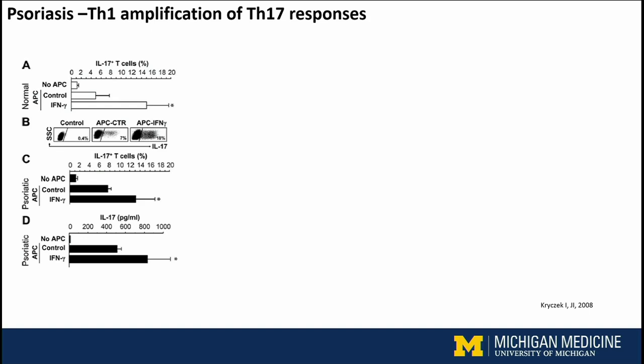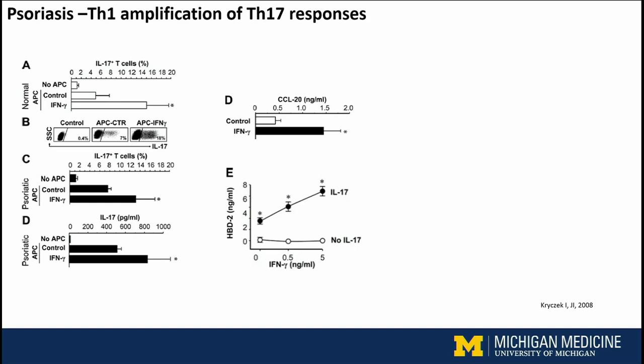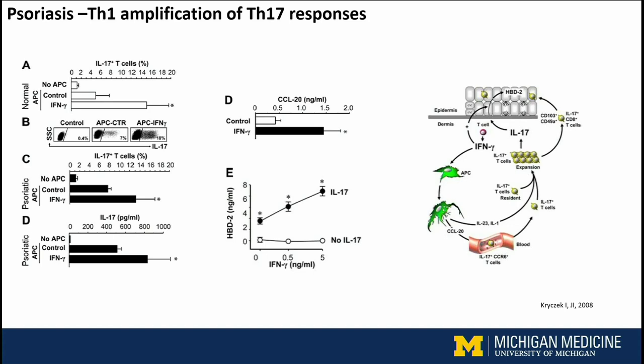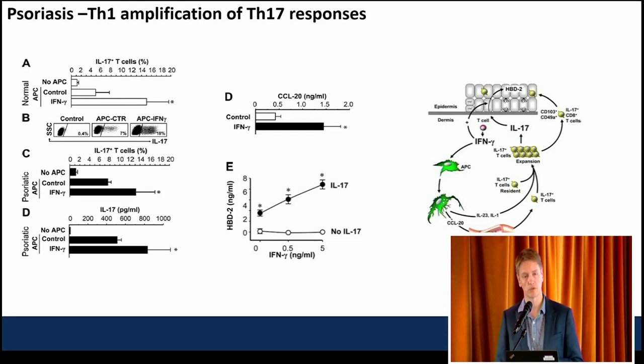Interferon gamma also induces the expression of CCL20, which is the major TH17 chemokine that brings these cells into the skin. And interferon gamma amplifies the effect of IL-17 on keratinocytes to increase the expression of antimicrobial peptides such as human beta-defensin-2. So in a way, you have a synergy or interaction between TH1 and TH17 responses in psoriasis, where interferon gamma is really amplifying the IL-17A responses.